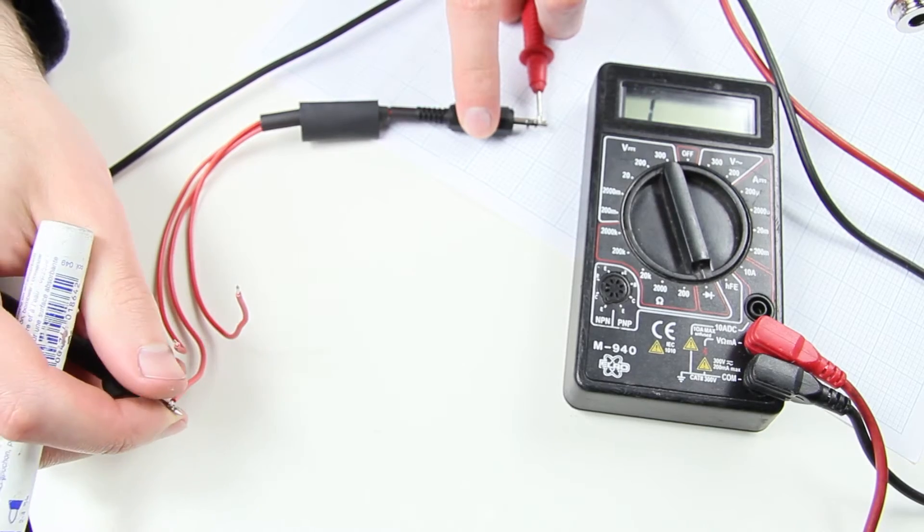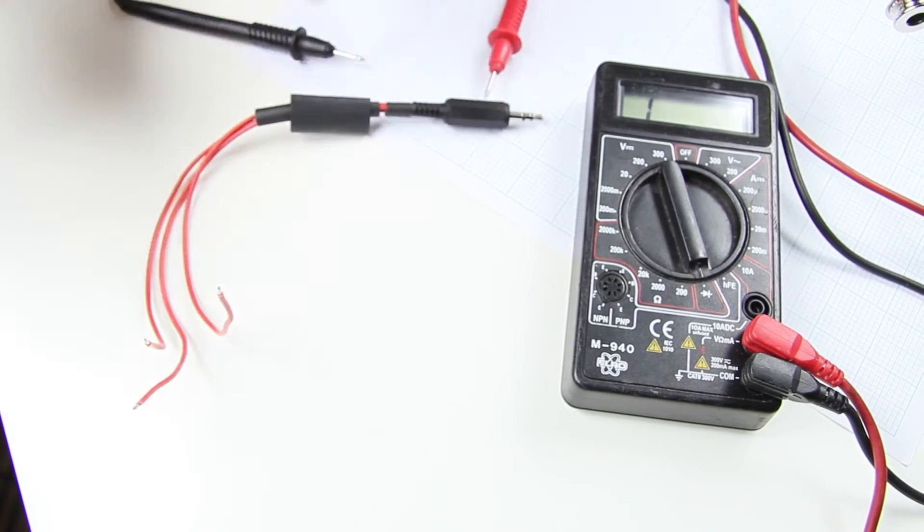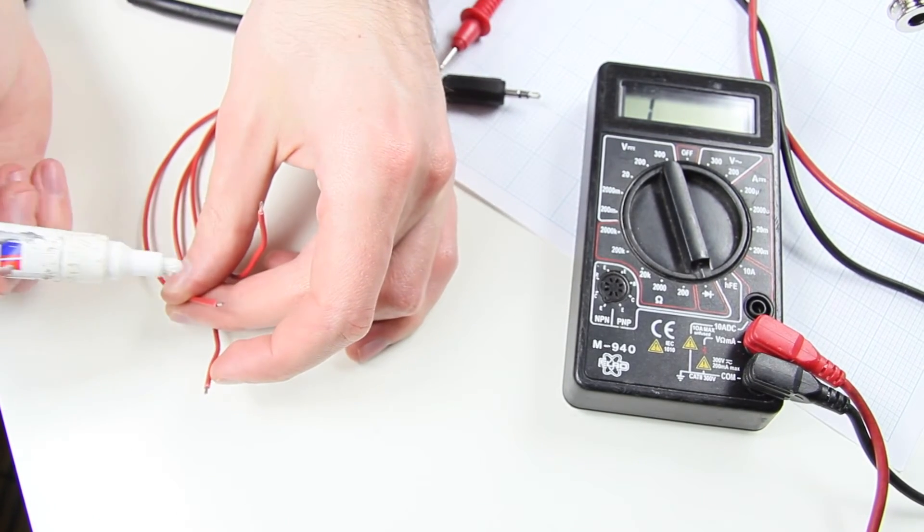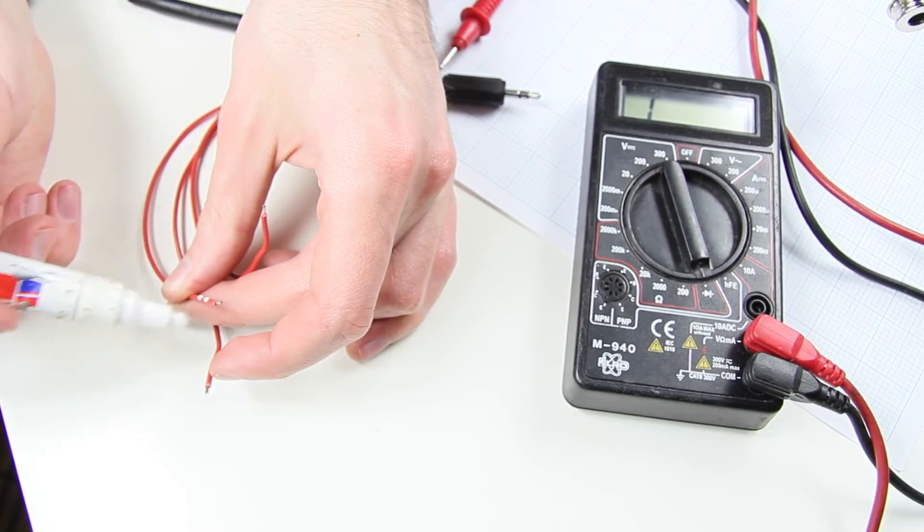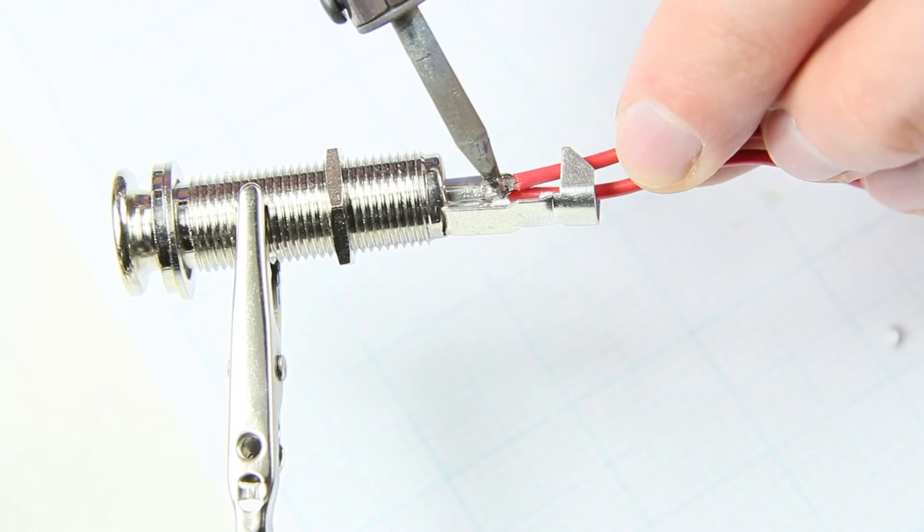At this stage we have to find out which cable is connected to each jack zone. We check the connection with the multimeter and mark the cables with a white pen. Now we can solder them to the jack plug.